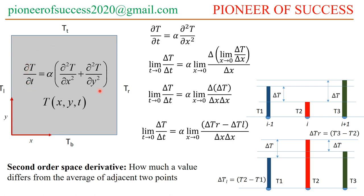This is the unsteady heat conduction equation and it has both spatial and temporal coordinates. It is first order with respect to the temporal variation and second order with respect to both x and y directions. Spatially, this equation is of second order.